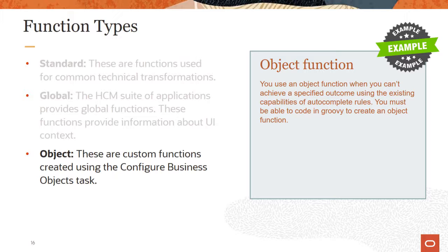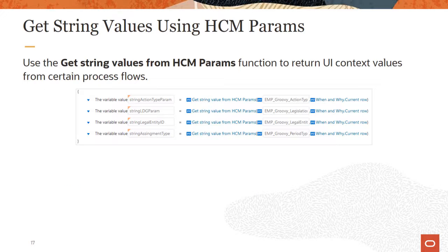To create an object function you must be able to code in Groovy. Because of their complexity object functions must be approved by Oracle. When defining your autocomplete rule you can use the global function get string values from HCM params. This function returns UI context values from a defined list of process flows.